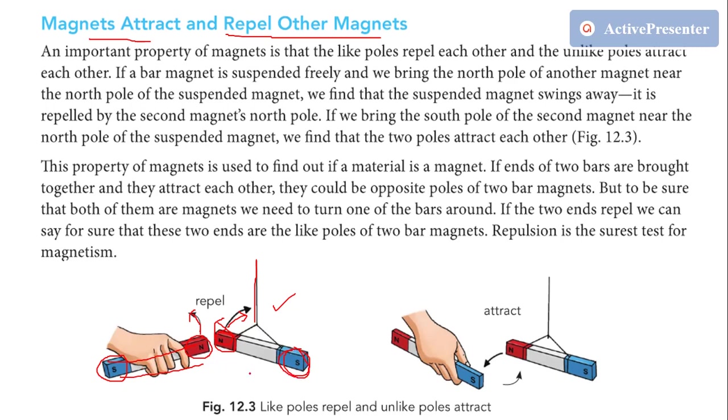If we put closer the south pole of another magnet to the south pole of suspended magnet, they will repel each other. It means south pole to south pole will repel, north pole to north pole will repel. But if we put closer the south pole of another magnet to the north pole of suspended magnet, they will attract each other.